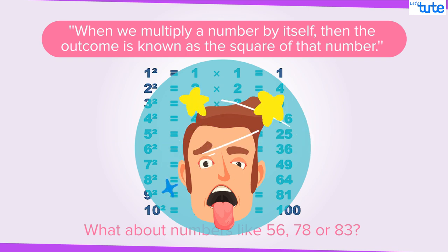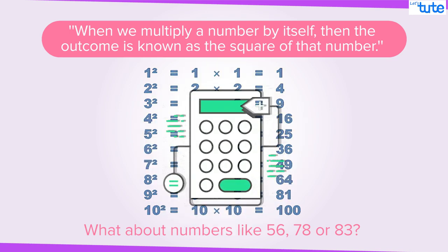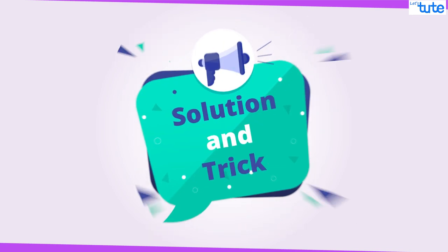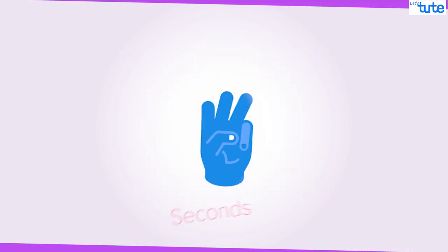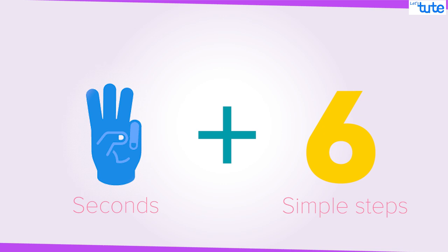It is tedious, difficult and time-consuming to find the square of any big number, especially when you don't have a calculator lying around. So, here we are with a solution and some tricks to find the squares of any number in just 3 seconds and 6 simple steps.